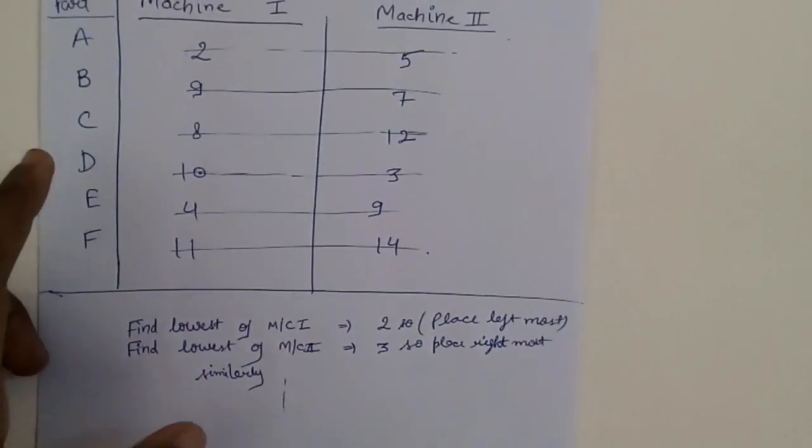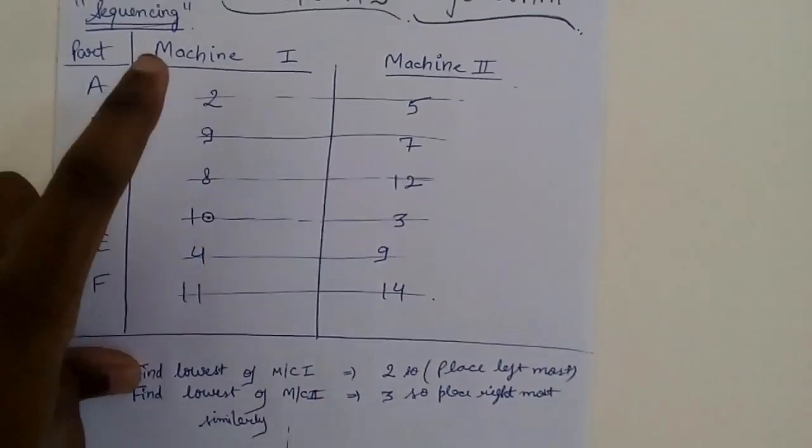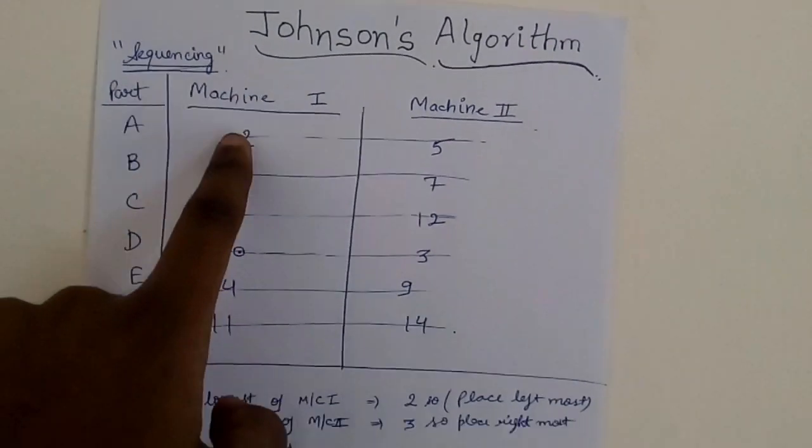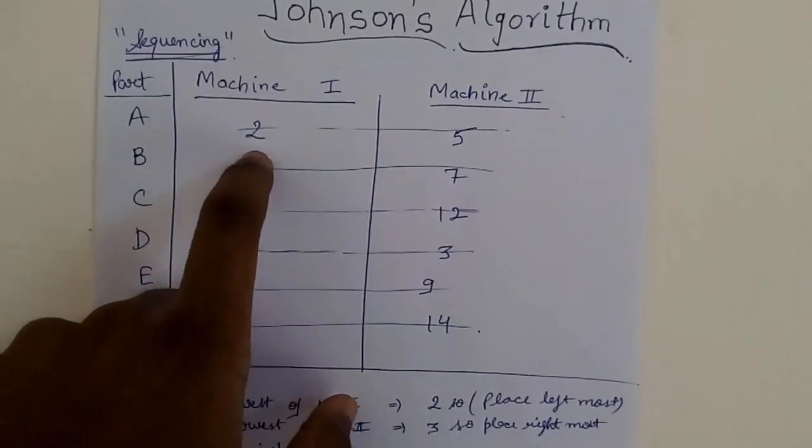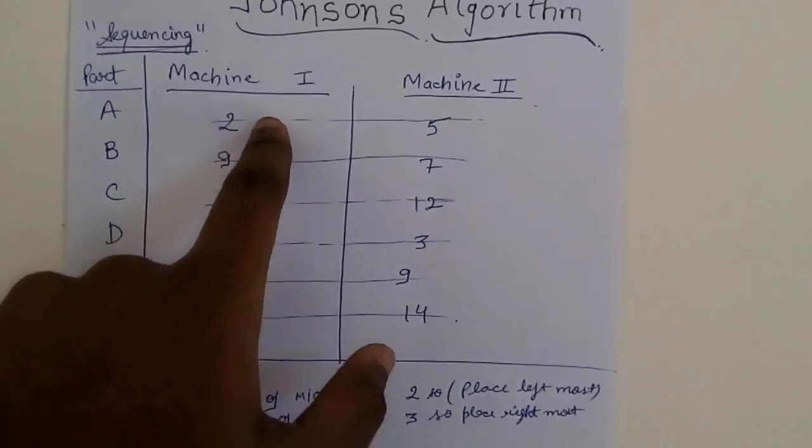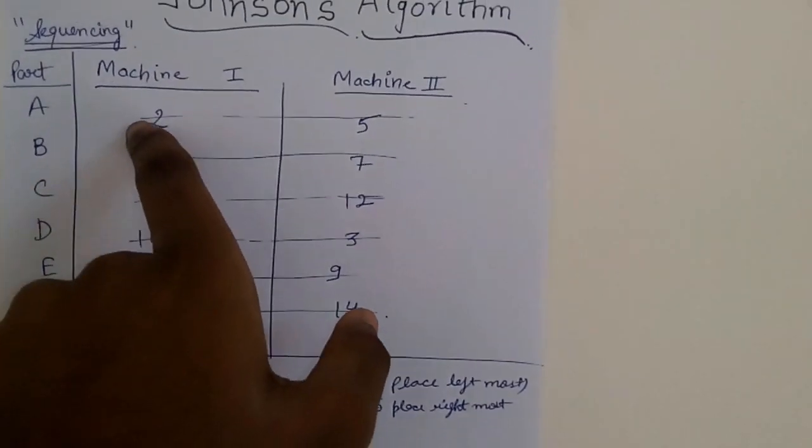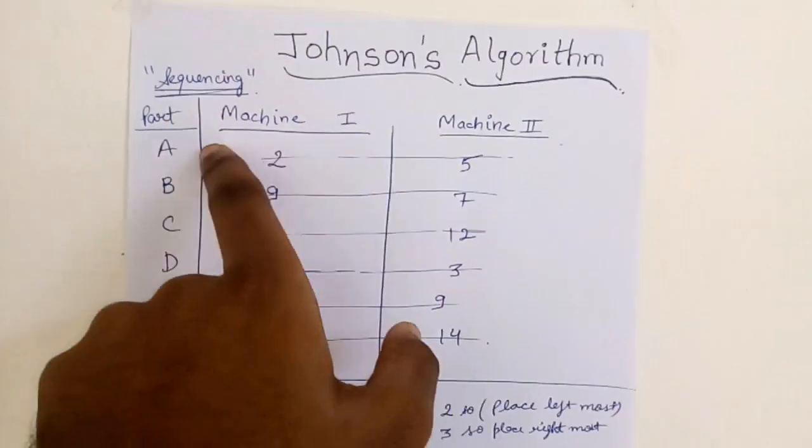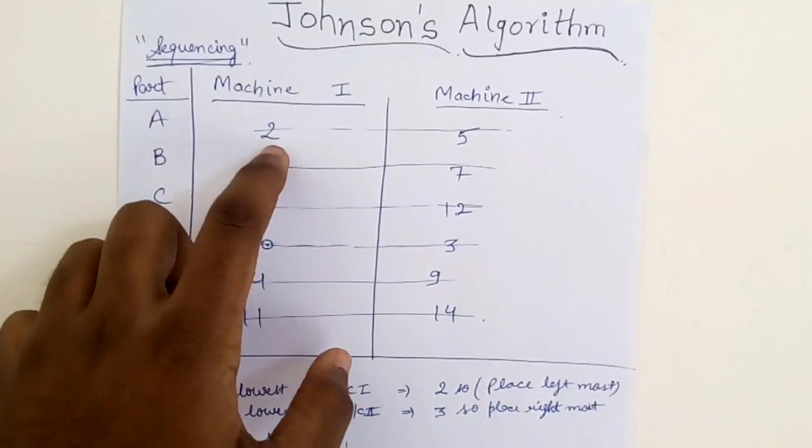Now by Johnson's algorithm, take machine one. You have to find the least of all these times. Here it is two, so you take two, strike off the complete row. Since two is minimum and corresponds to part A, you write A on the leftmost position.